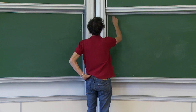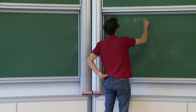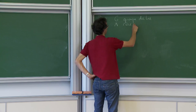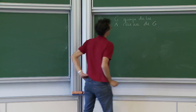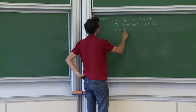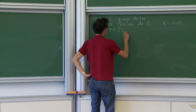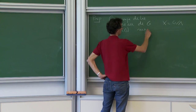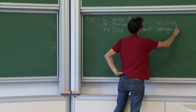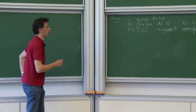La situation est la suivante : G est un groupe de Lie, Lambda est un réseau de G, et mu est une mesure de probabilité sur G. Je noterai toujours X = G/Lambda. Mu est une mesure de probabilité sur G à support compact. Et aujourd'hui, on va voir exactement où ça sert. Cette hypothèse, je vous ai dit plusieurs fois que je n'en avais pas besoin — mais aujourd'hui on va voir à quel endroit elle intervient.